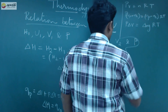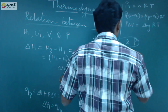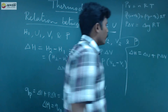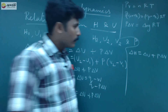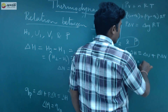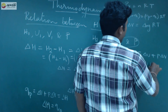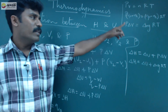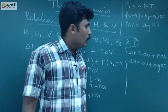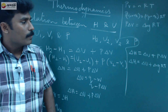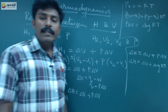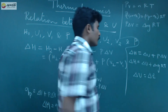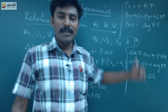Substituting the value of PΔV into the equation: ΔH equals ΔU plus PΔV, and since PΔV equals ΔngRT, we get ΔH equals ΔU plus ΔngRT. Here ΔU equals ΔE. This is a very important relation for the five questions.